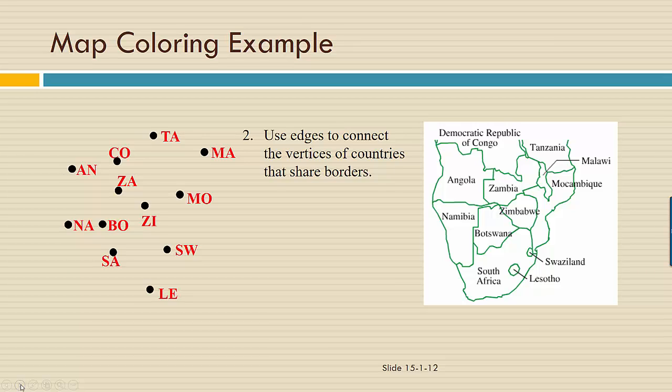Starting with Namibia, we'll connect the country to each of the countries with which it shares a border. There are actually four: Angola, Zambia, Botswana, and South Africa. We'll continue in this way connecting each country to each of the other countries with which it shares a border.